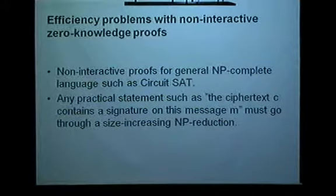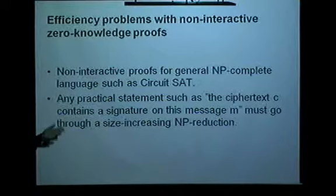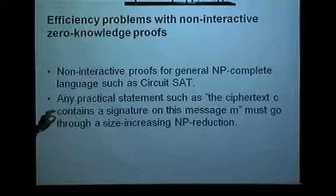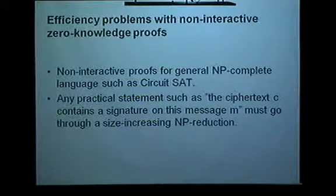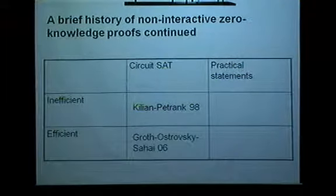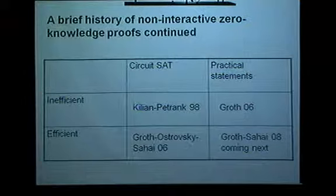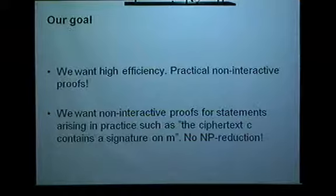The problem with what we have seen so far is that non-interactive proofs have typically been given for some NP-complete language such as circuit satisfiability or Hamiltonian circuits. That's really a problem: even a very simple statement like 'here's a ciphertext and it has a signature on this message' requires a reduction to circuit satisfiability, which blows up the size. Even a simple statement needs a very large circuit. We can give a very efficient proof for the circuit, but if it's a large circuit we're still losing a lot of computation and communication.